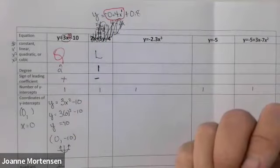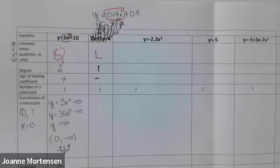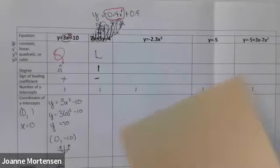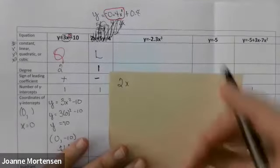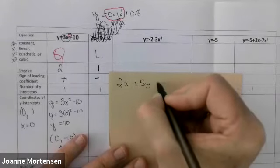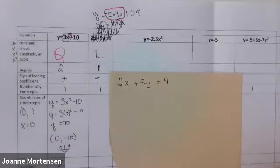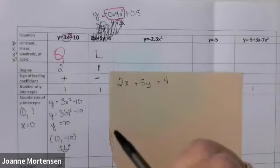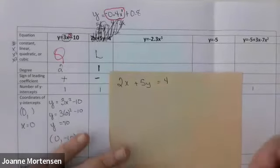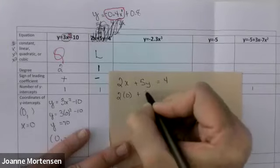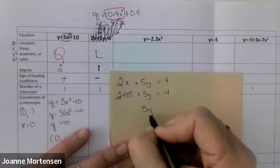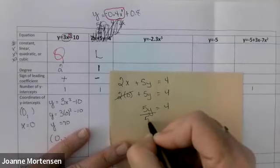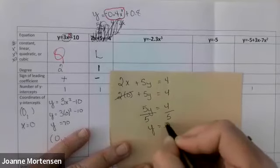We know it has one y-intercept — polynomial functions always do. Put a zero in where x is. I can go back to the original equation: 2 times 0 plus 5y equals 4, so that zero disappears, 5y equals 4, divide by 5, y equals 0.8.